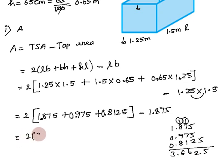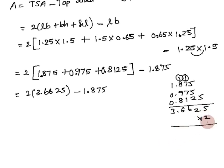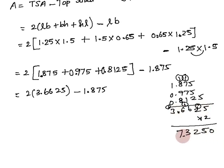So 2 × 3.6625 gives us the total lateral area. Multiplying: 2 × 5 = 10 carry 1; 2 × 2 = 4+1 = 5; 2 × 6 = 12 carry 1; 2 × 6+1 = 13 carry 1; 2 × 3+1 = 7. Result is 7.3250. Then 7.325 minus 1.875 gives the area of the open box.